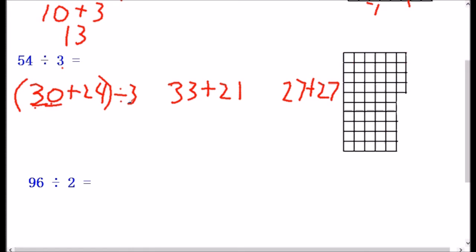This would be 30 divided by three, which is 10, plus 24 divided by three, which is eight. And that gives us 18.